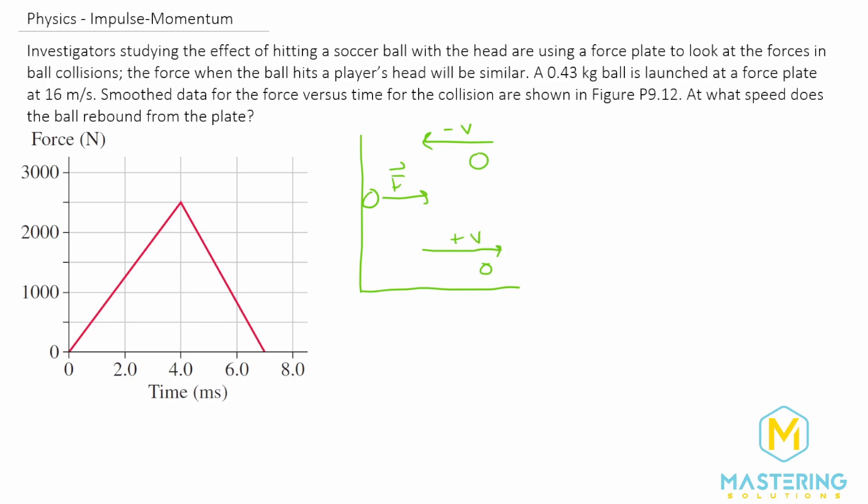So let's go through and list our variables. We know that the mass of the soccer ball is equal to 0.43 kilograms. The initial velocity is equal to negative 16 meters per second. The final velocity, we don't know.